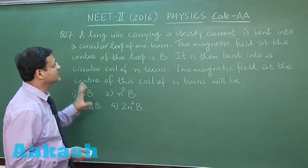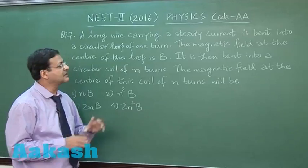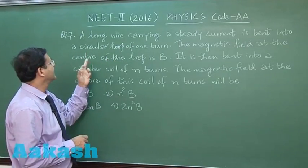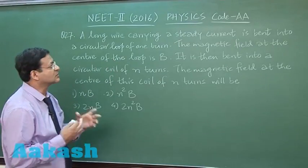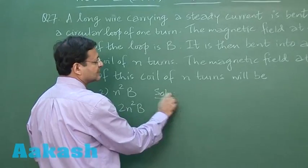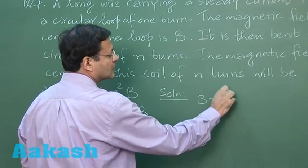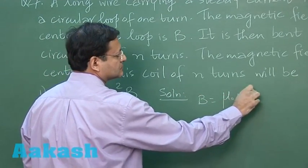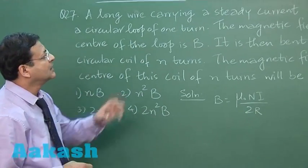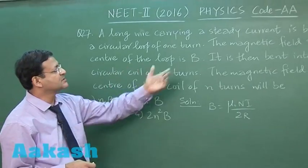This question 27 is based on magnetic effects of current, a very standard question. It says that a long wire carrying a steady current is bent into a circular loop of one turn. You are supposed to calculate the magnetic field at the center of the loop. You are using the standard formula here, mu naught NI by 2R. N is number of turns, I is current, R is the radius. The magnetic field at the center of the loop is B.